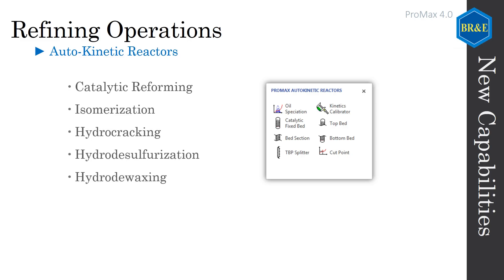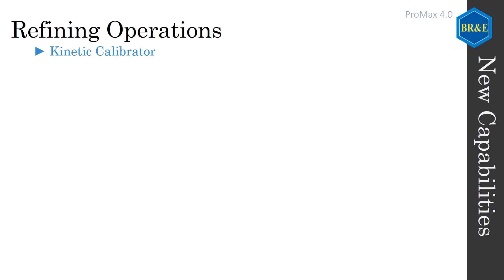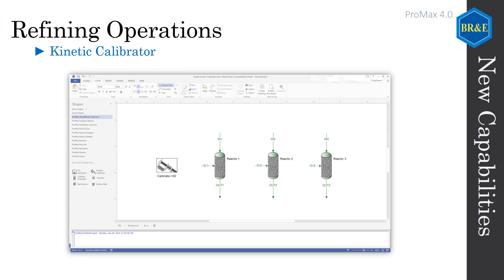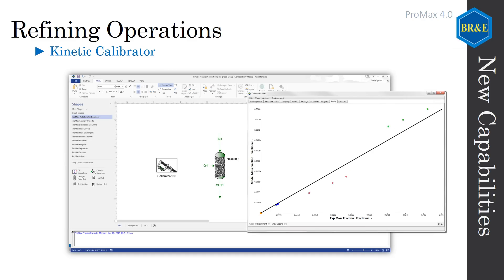Hydro desulfurization, hydro de-waxing, hydro isomerization, hydro skimming, and hydro finishing reactors can now be modeled in PROMAX using our new autokinetic reactors, with more reactors in development. Included with our new reactor suite is a calibrator to optimize your model against measured data and powerful graphical options to help with analyses.